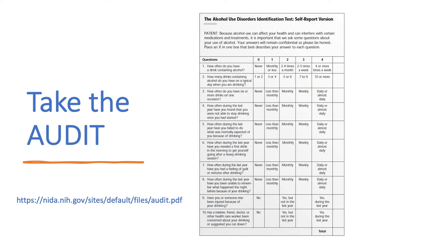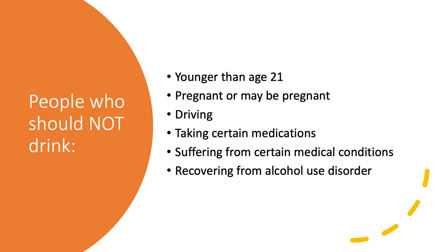One of several online audit self-assessments is provided by the National Institute on Drug Abuse. This self-assessment features the AUDIT, a 10-item screening tool developed by the WHO to assess alcohol consumption, drinking behaviors, and alcohol-related problems. It provides a score related to risk for developing problems with alcohol. A score of eight or more is considered to indicate hazardous or harmful alcohol use according to the guidelines. A diagnosis of AUD can only be made by a medical professional.